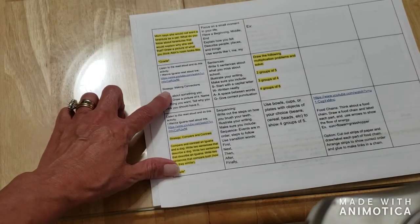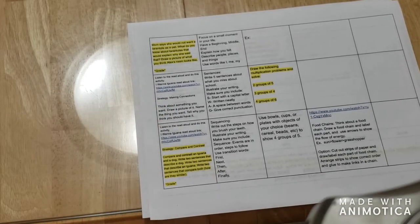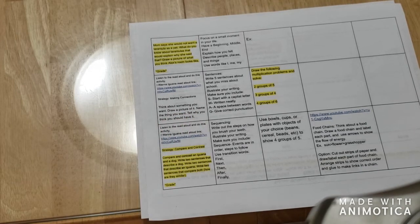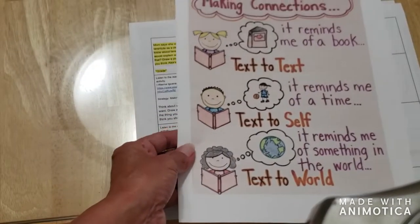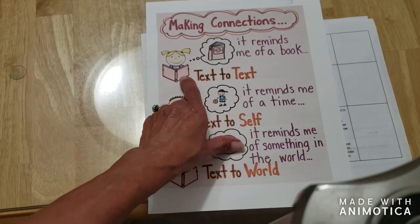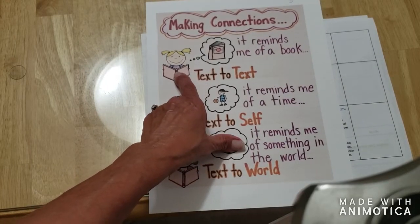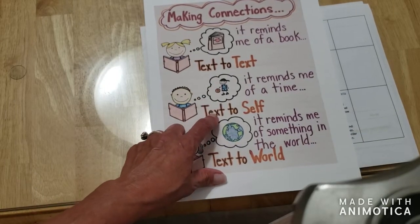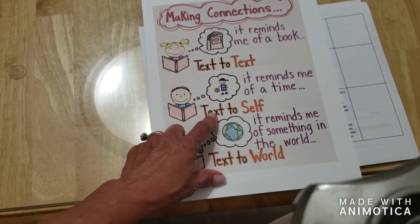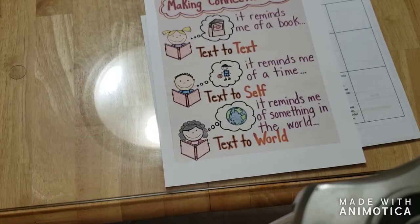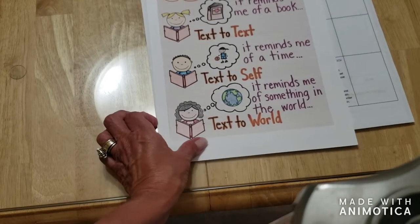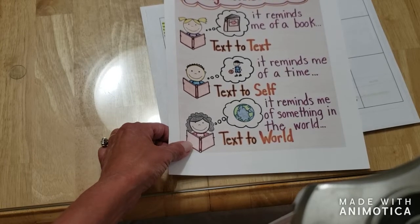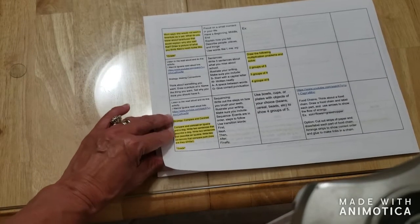Another activity is again listening to the read aloud of 'I Wanna Iguana,' and the strategy for this day is going to be making connections. I want you to think about something you want, draw a picture of it, name the thing you want, and tell why you think you should have it. Making connections is when we connect text to text — something in this book reminds you of something you've read before; text to self — it reminds you of a time when you wanted something; or text to world — it reminds you of something in the world, like a movie or something that happened to somebody else.